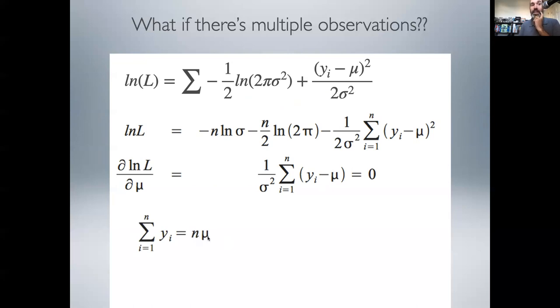And then I'll just divide by n and I will get the maximum likelihood estimate of mu is just the mean of the y's, because the sum of y divided by n is just the definition of a sample mean. So again, we end up with a very intuitive result.